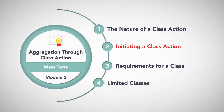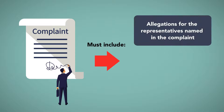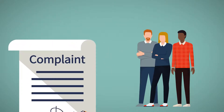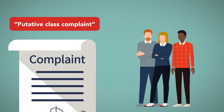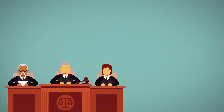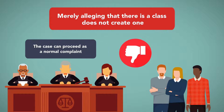Initiating a class action. To start a class action, a lawyer representing an individual plaintiff files a complaint for the named clients, like any tort case. However, the complaint must include allegations for the representatives named in the complaint and allegations that apply to a large class, including all people with similar claims. The client is designated as the representative for the entire class. The complaint is then referred to as the putative class complaint, and the proposed class as the putative class. However, merely alleging that there is a class does not create one — the court must certify the existence of the class. If the court denies certification, the case can proceed as a normal complaint for the named plaintiffs, but it will not be a class action.